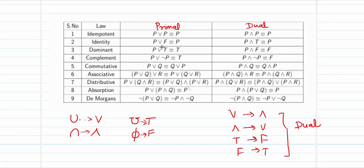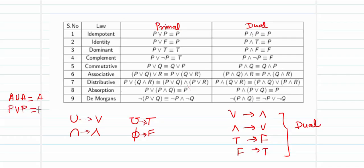The dual of a primal statement, if the primal is true, is also equivalently true. So the operation of replacing ∨ with ∧, false with true, true with false, and ∧ with ∨ gives us the dual statement. These laws can be verified through a truth table, or if you are comfortable with set theory notation you can use that. We know that A ∪ A = A, and similarly P ∨ P ≡ P.